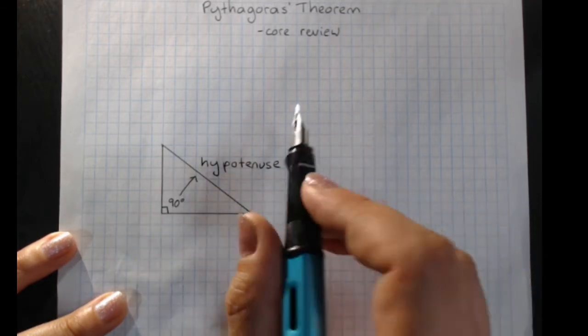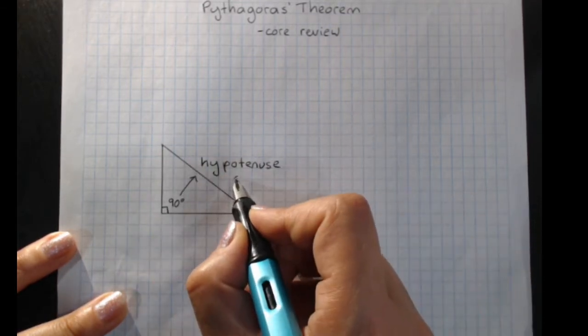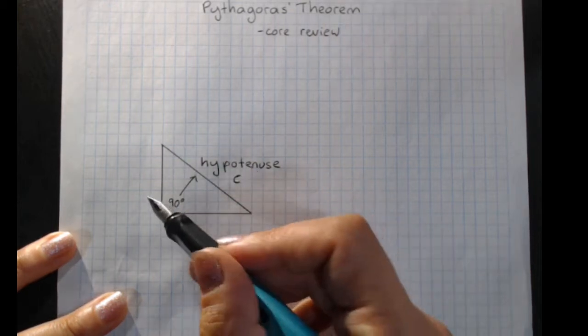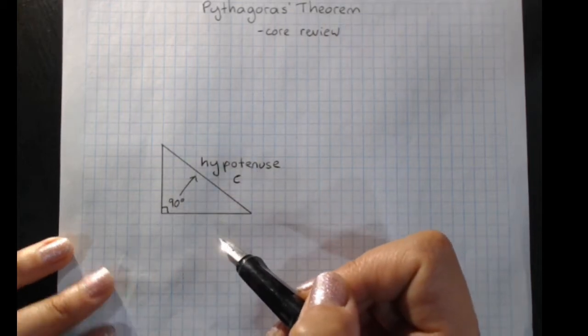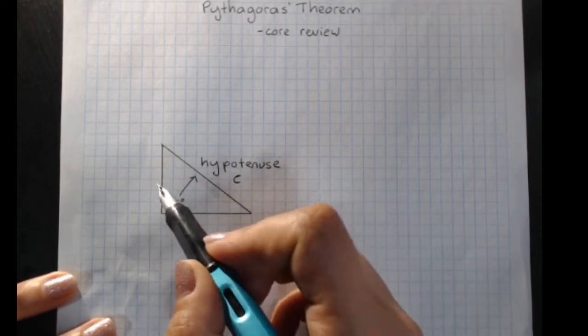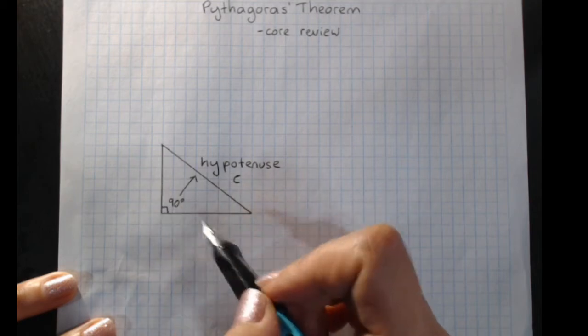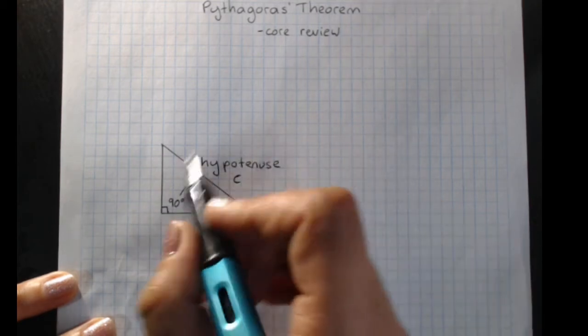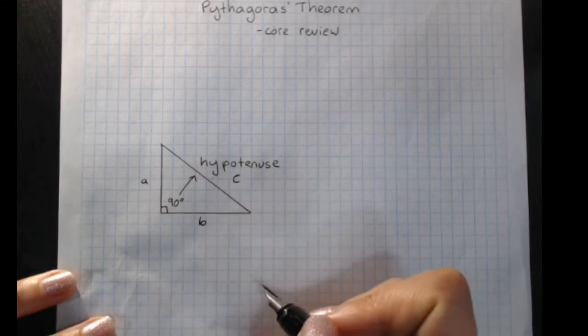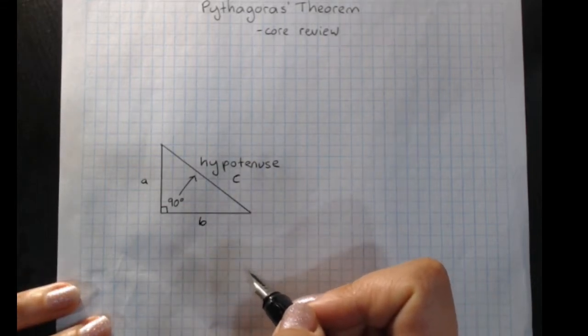And in Pythagoras' Theorem, in the formula, we call this side C. The two shorter sides don't have special names like hypotenuse, and they get labelled A and B, and it doesn't matter which short side is which, as long as one is A and one is B. But you've got to make sure that the hypotenuse is C for the formula.